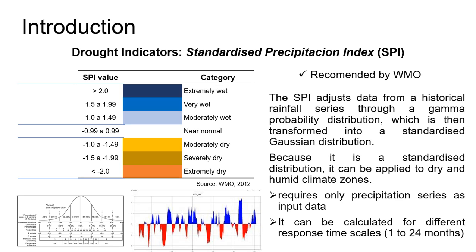SPI requires only precipitation series as input data, and it can be calculated for different response time scales — 1 to 24 months — which are considered advantages of using SPI.